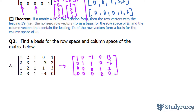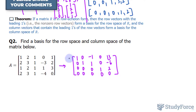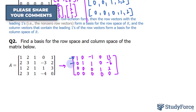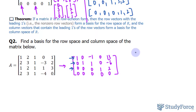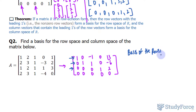Once you have it in row echelon form, we can now find the basis for our row space. We'll have leading ones here, here, and here. We'll write these down — they should look like this. So the basis of the row space are these.